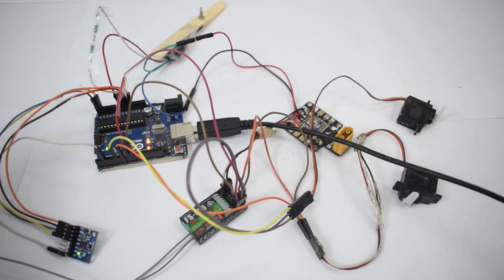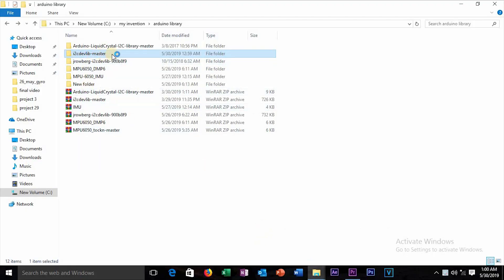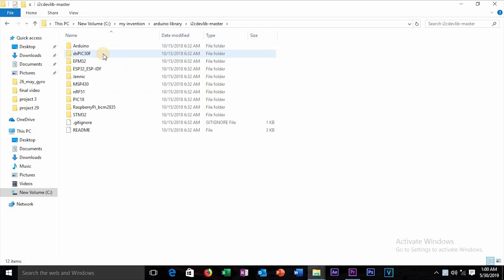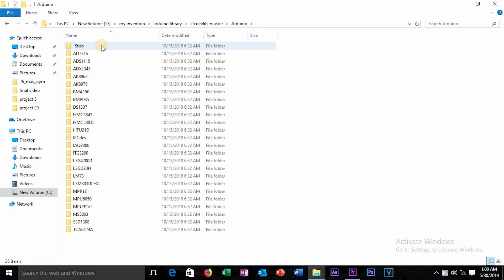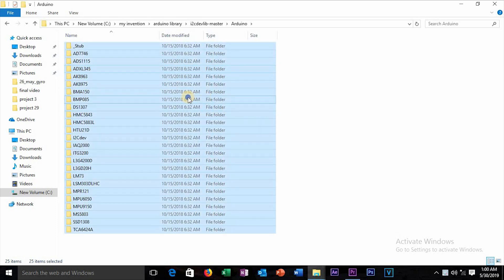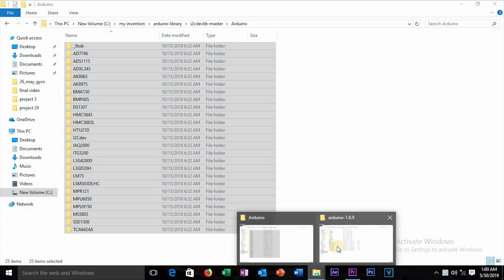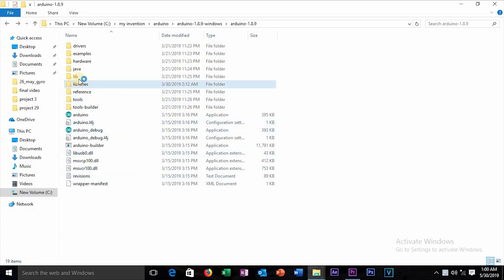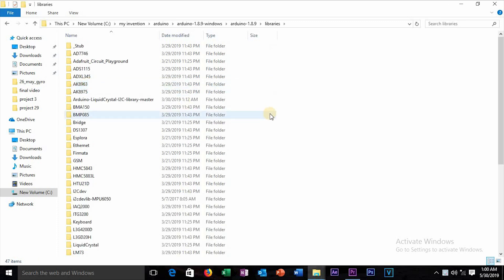First of all you have to download the I2C dev and MPU 6050 library. Link is also given in the description. Now copy all and paste it to the Arduino library.